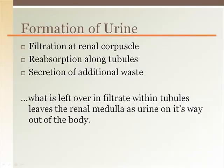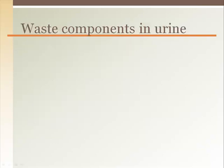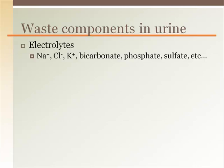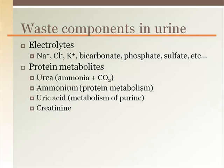Once the filtrate has entered the minor calyx, it is then called urine. Among some of the waste components that may be found in urine are electrolytes. The concentration or elimination of any of these electrolytes depends heavily on the diet of the individual. Any number of protein metabolites, such as urea or ammonia, uric acid from the metabolism of the amino acid purine, or creatinine, which is exclusive to skeletal muscle.